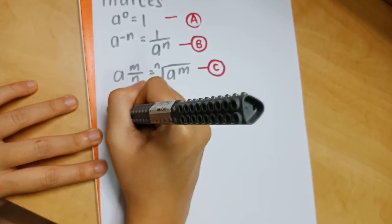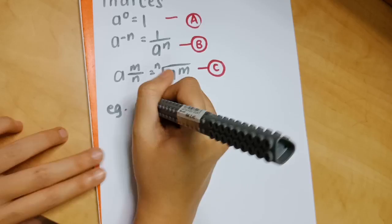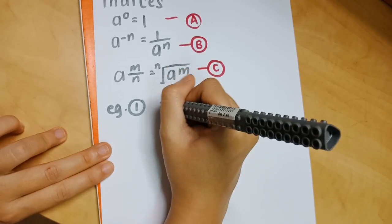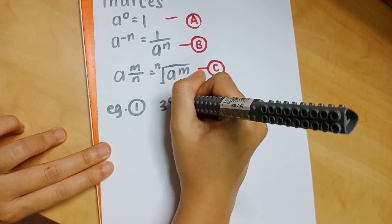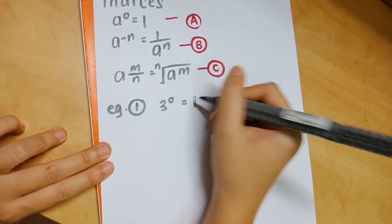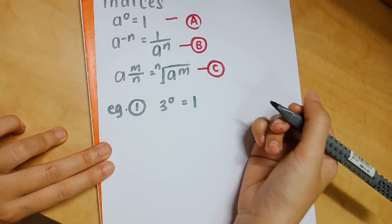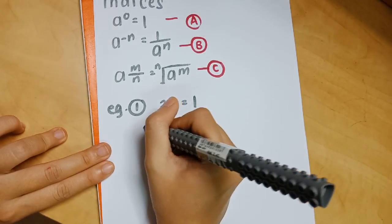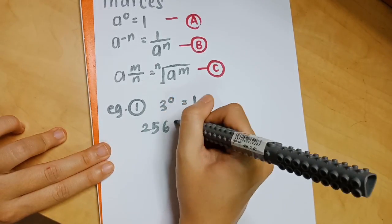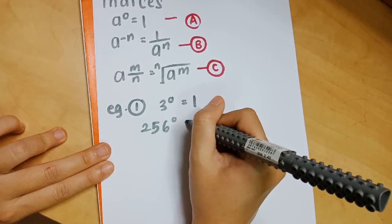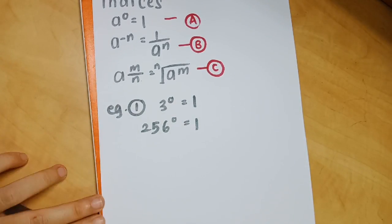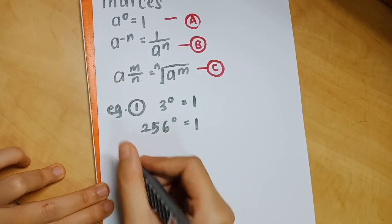The first example is for concept A. We have 3 to the power of 0, which equals 1. And then 256 to the power of 0 also equals 1. Anything to the power of 0 will equal 1.